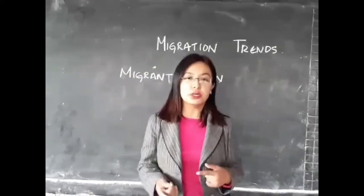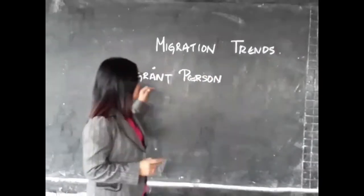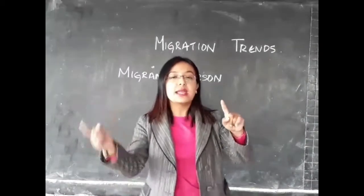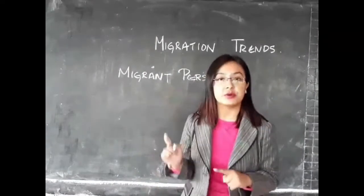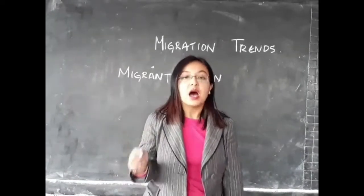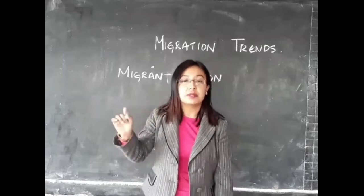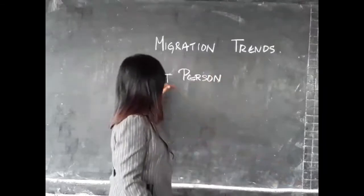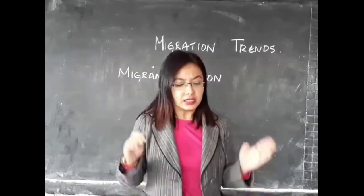Moving forward, there are a few basic concepts in migration. The first one is a migrant person. Who is a migrant person? A person who migrates from one place to the other is considered a migrant person. The definition of a migrant person is one who at a given census was enumerated at a place other than his or her place of birth. A migrant person's stay in any place could be of any duration.